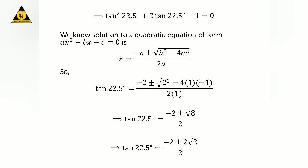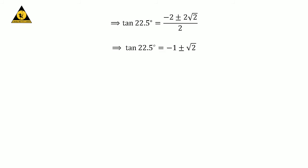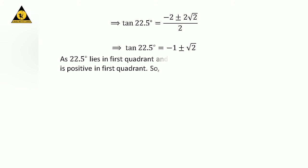We know square root of 8 is equal to 2 times square root of 2. We can see 2 is a common factor in the numerator. Cancelling the common factor 2 in the numerator with the 2 in the denominator, we get tangent of 22.5 degrees is equal to minus 1 plus or minus square root of 2. Since 22.5 degrees lies in the first quadrant, where the tangent function is positive, tangent of 22.5 degrees equals square root of 2 minus 1, as the other value, minus 1 minus square root of 2, is negative.